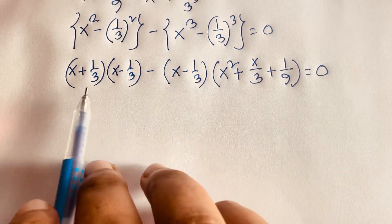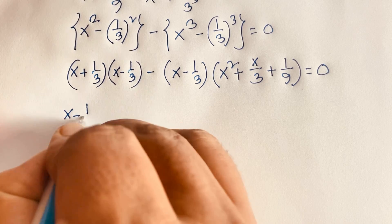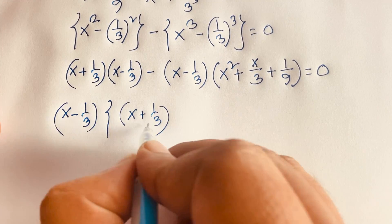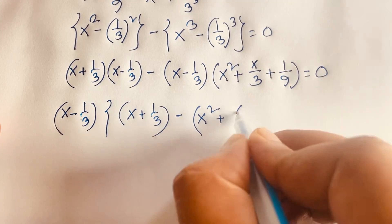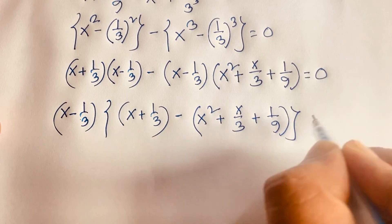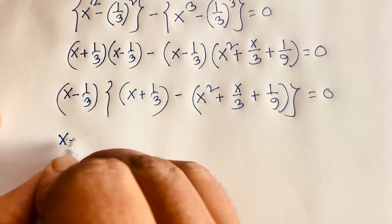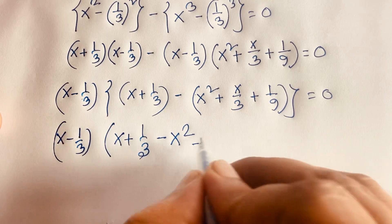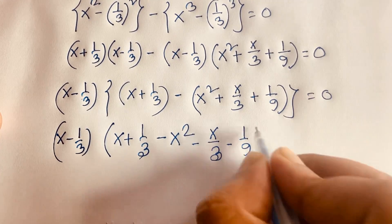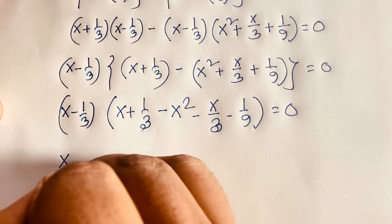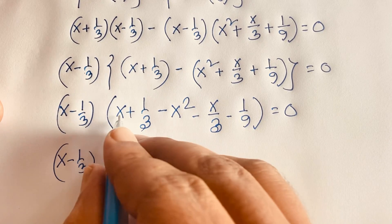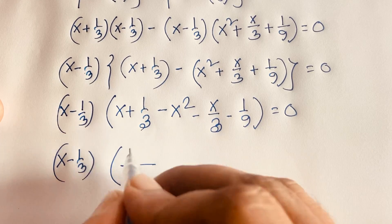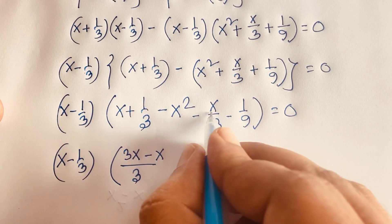Now (x minus 1/3) is a common factor. Factoring it out, we get (x minus 1/3) times (x plus 1/3) minus (x squared plus x over 3 plus 1/9) equals 0. Taking the least common value of 3 inside the bracket: 3x minus x gives 2x over 3.